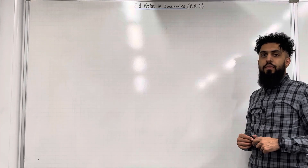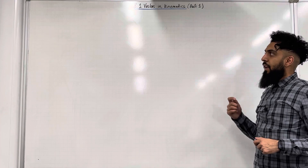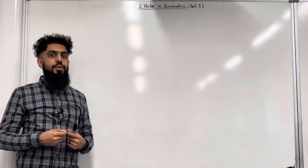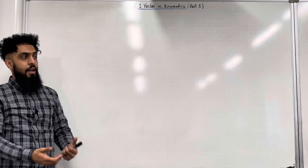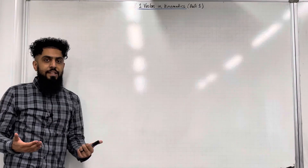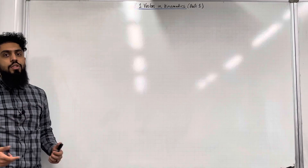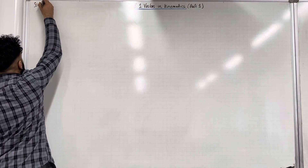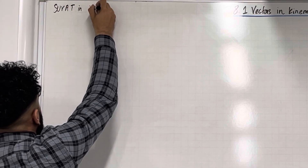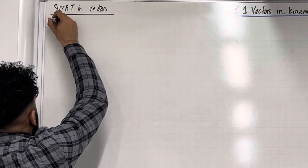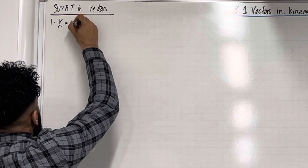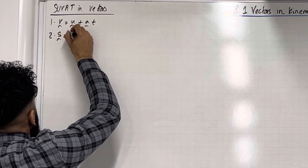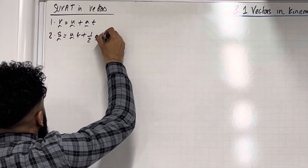I'm going to start this teaching video by going through some important facts. Let's have a look at SUVAT in vectors. There are two SUVAT formulas that we're going to write as vectors. Number 1: V = U + AT. Number 2: S = UT + ½AT².